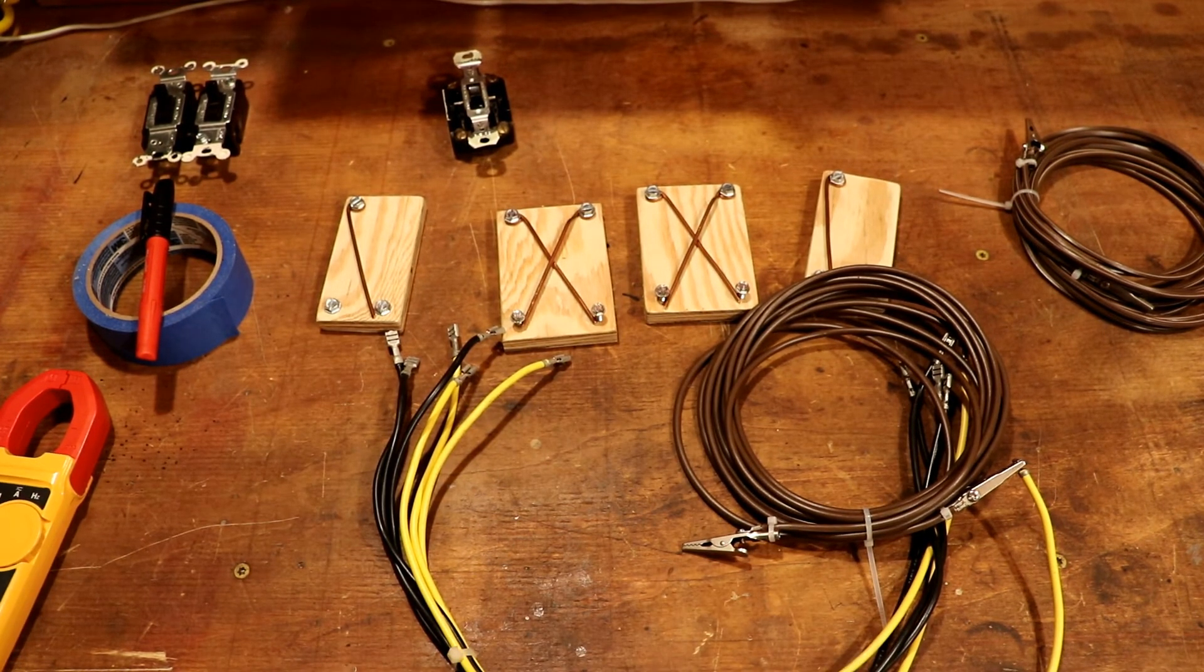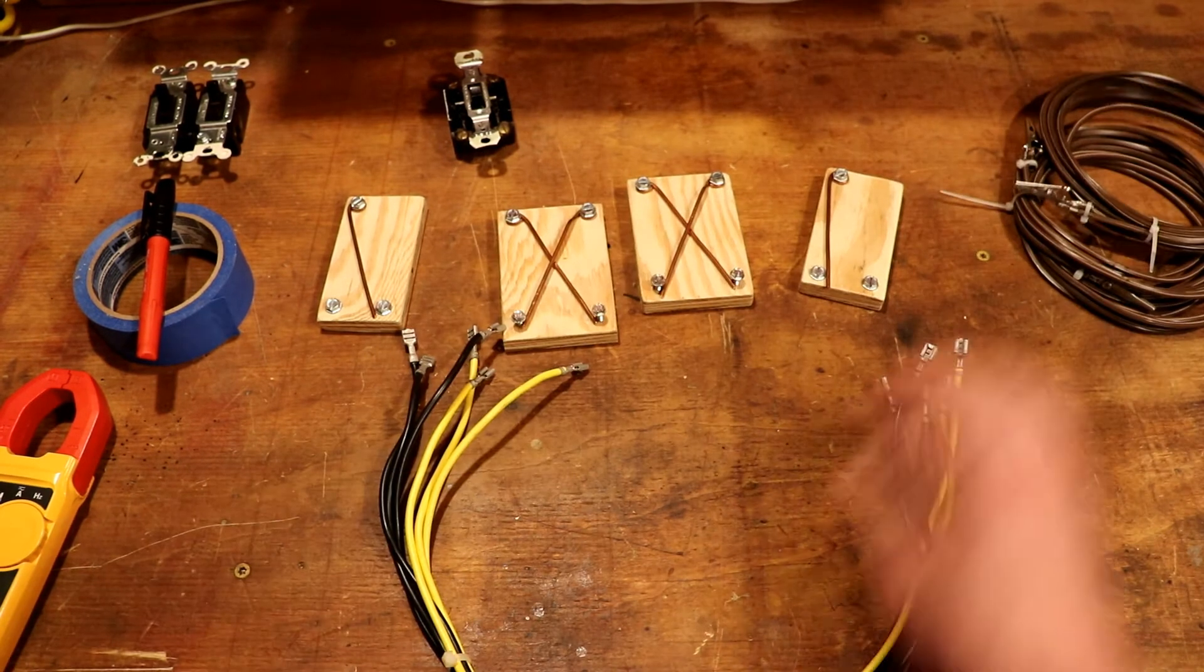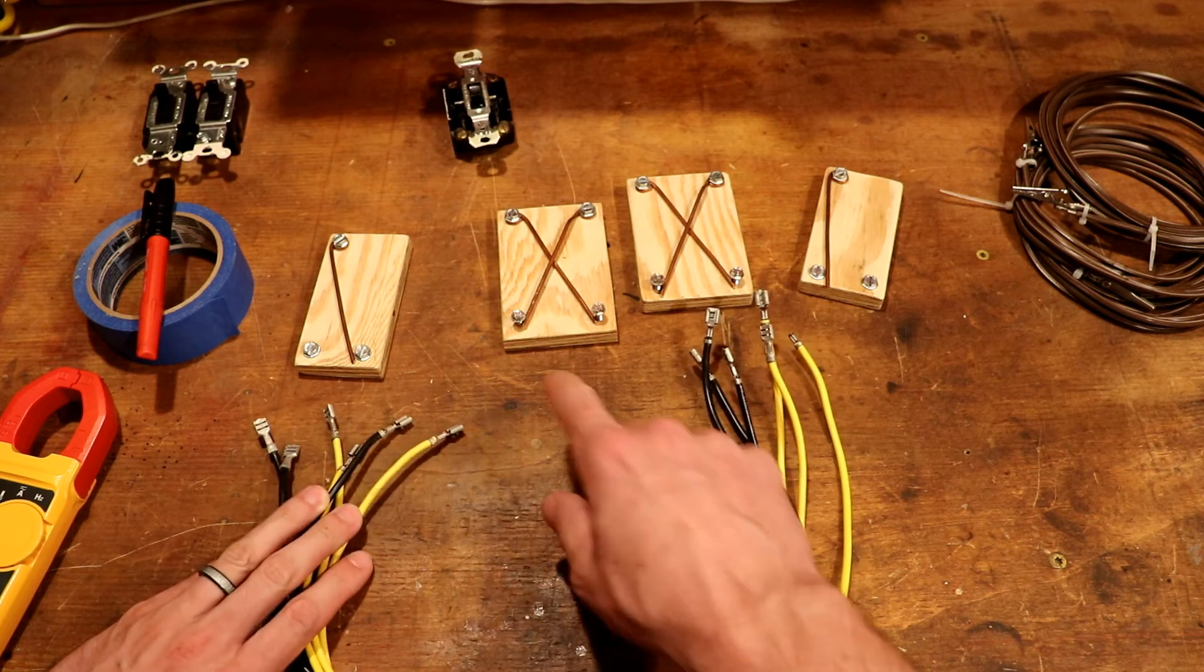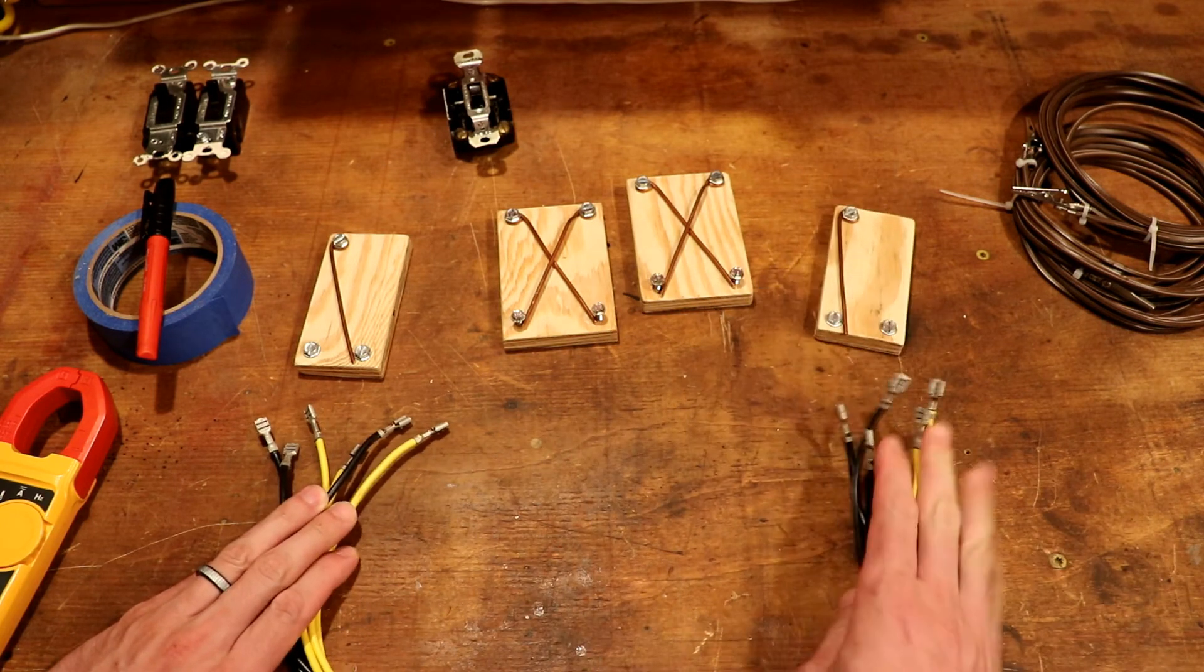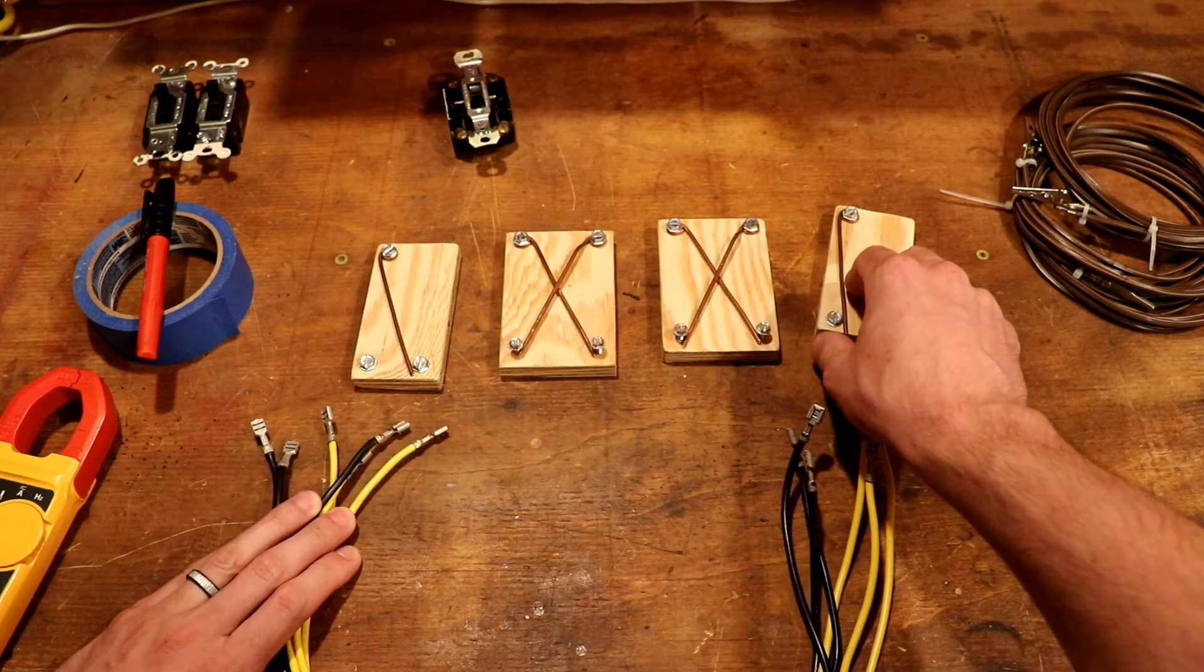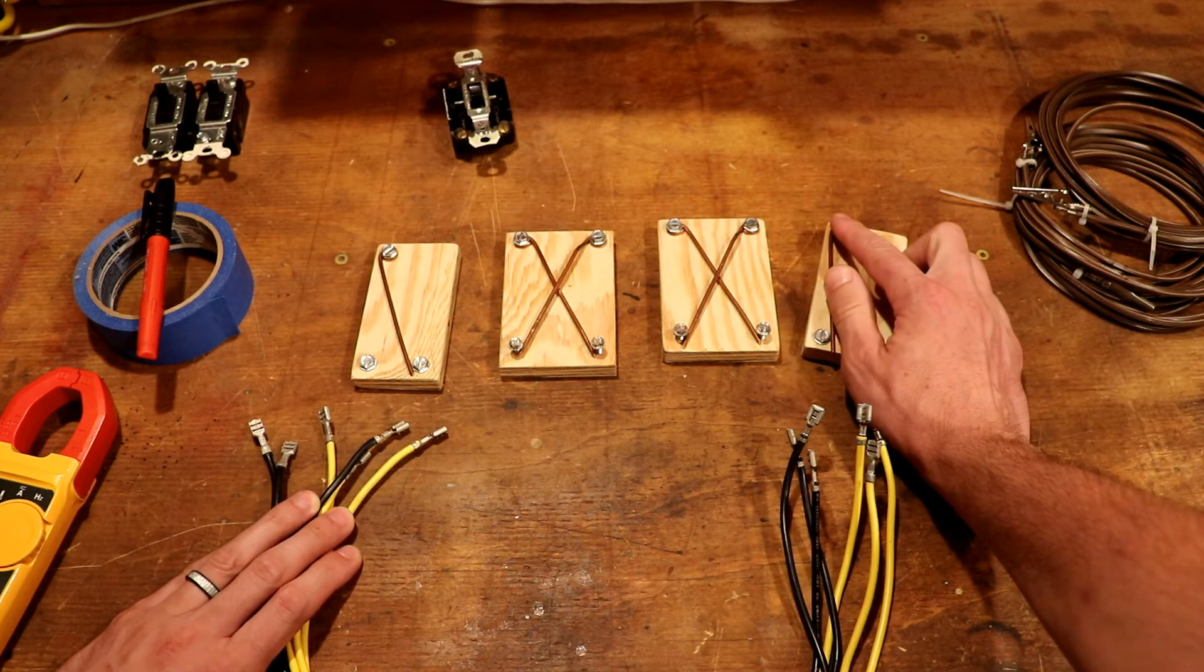So we'd label that maybe a three and a three by this point. Now keep on running those numbers up. Don't reuse any of your numbers there. And repeat that process. Once you get all the wires in a box labeled, move on to another box. And by the end of that process, you should have all the wires labeled except one. There's going to be one wire that feeds power out of the circuit to your light. That's not going to be labeled yet.